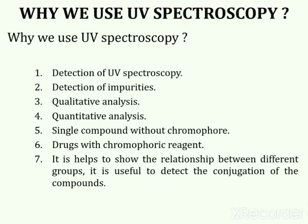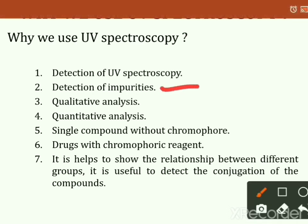Ultraviolet spectroscopy is used for detection of impurities, qualitative analysis, quantitative analysis, analysis of single compounds without a chromophore, and drugs with a chromophoric reagent. A chromophore is a group which shifts the absorption maxima towards the longer wavelength side and thus produces a color; different dyes are examples of chromophores. UV spectroscopy also helps to show relationships between different groups and is mainly used for detection of conjugation in a compound.